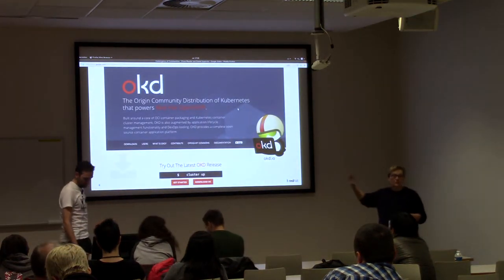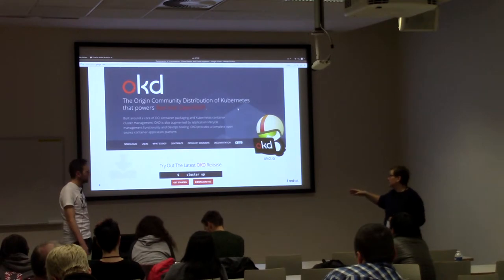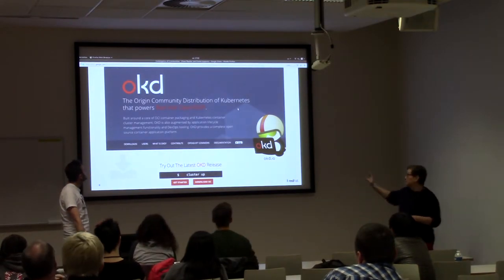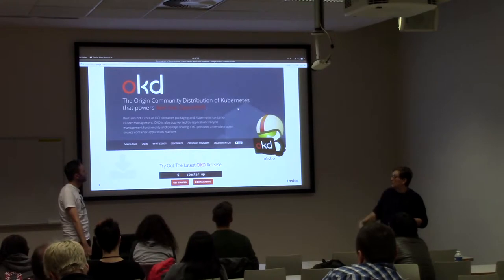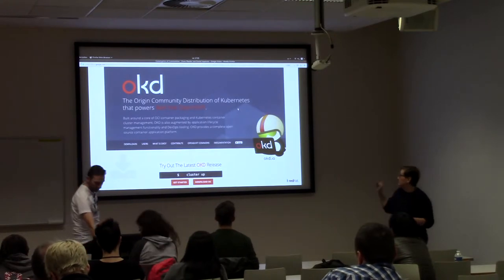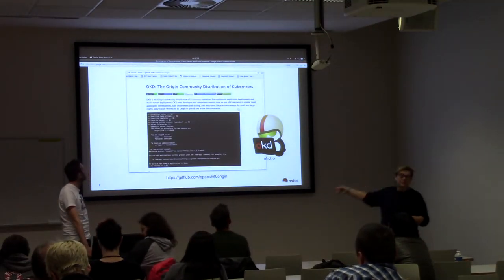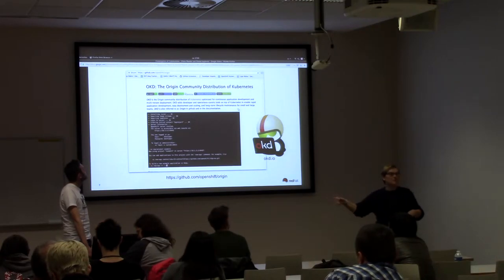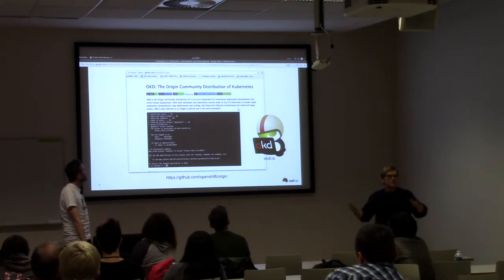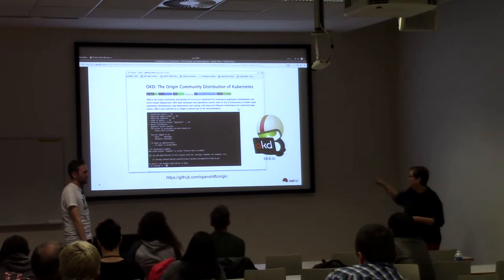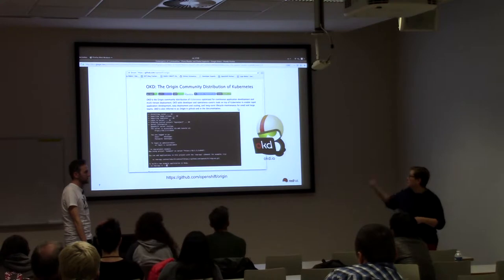OKD is out there at OKD.io - you can still download it. We didn't change the name of the repo at all; it's still Origin, OpenShift Origin. We now refer to it as OKD and we brought the Panda back in a big way on the site.